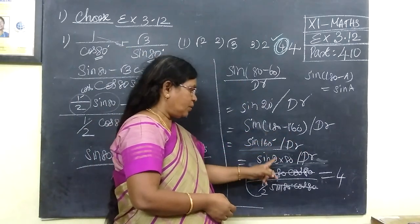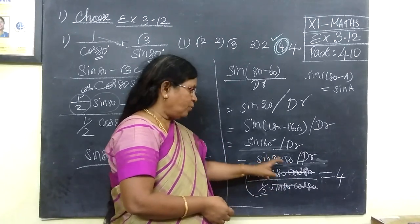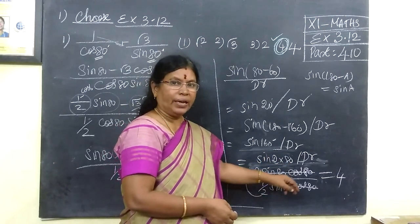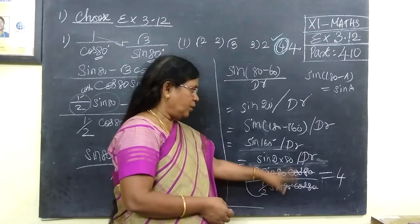2 into 180. Sin 3A formula is 3 sin A minus 4 sin cubed A. What is the example of this?